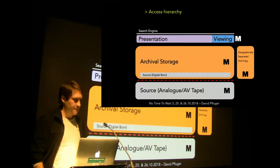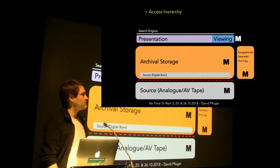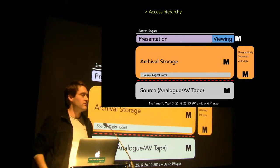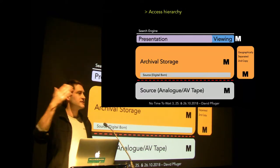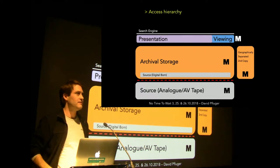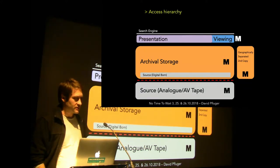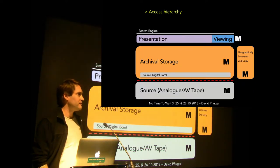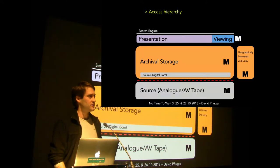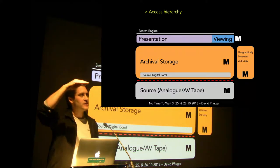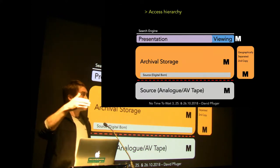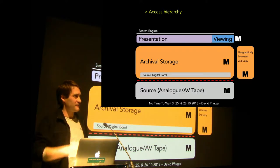On top of all of this is the search engine, which gives you access and information on what is in your archive. On all of these levels there is metadata, which should correspond naturally and should not be different. But not on every layer will there be the same amount of metadata. The set of meta information should be complete for the digital archival storage, but there may only be an excerpt accessible through the search engine. There shouldn't be more in the search engine than in your archival storage.